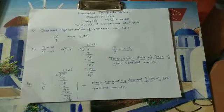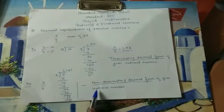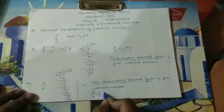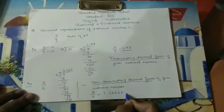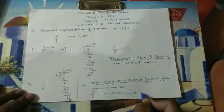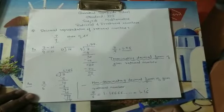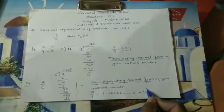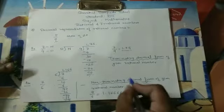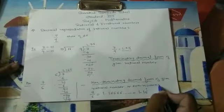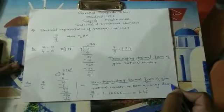The decimal form of 7 by 6 is 1.1666666... We can represent this as 1.16 with a dot (recurring notation) over the 6. This dot indicates the process of division will never end. It is called the non-terminating non-recurring decimal form.